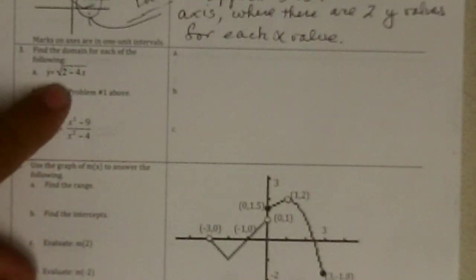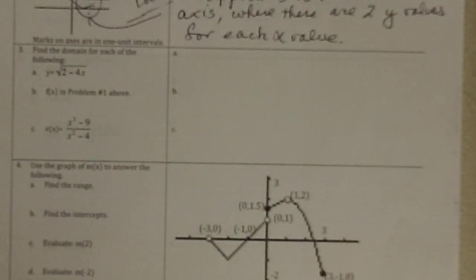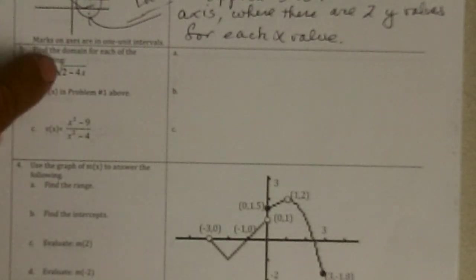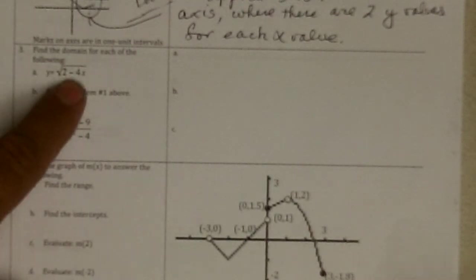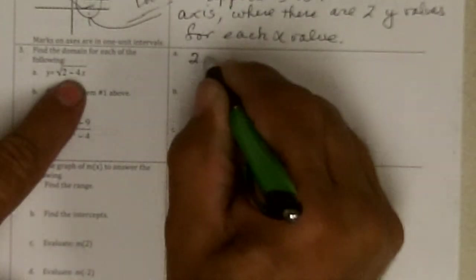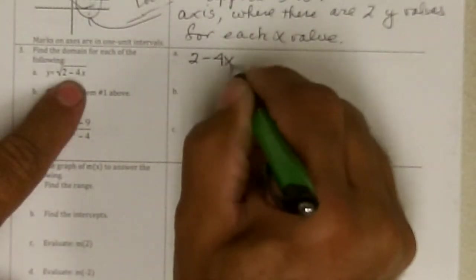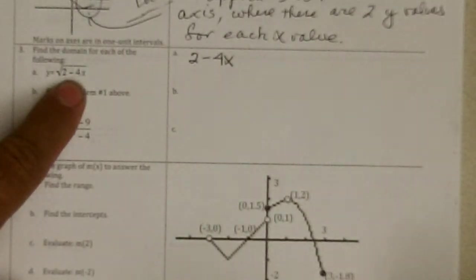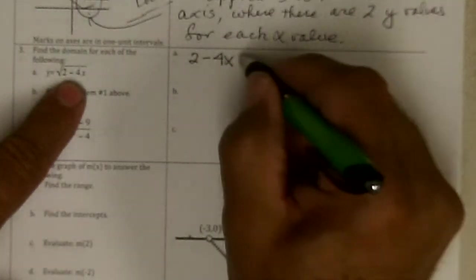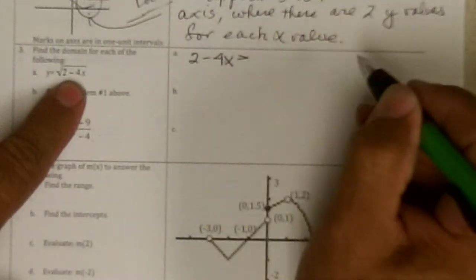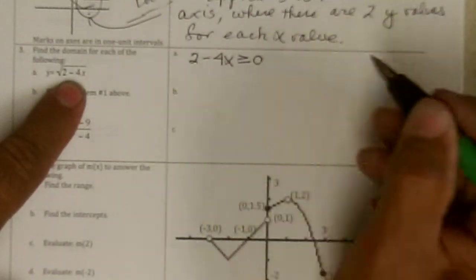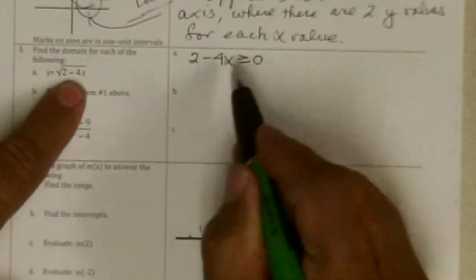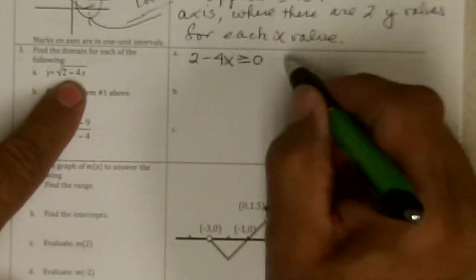Three, find the domain. The only things that you're concerned about right now in this class is, don't do even roots, square roots, fourth roots, six roots, of negative numbers. So the 2 minus 4x cannot be negative, which means it has to be greater than or equal to zero. And if we solve this by subtracting 2 from both sides,